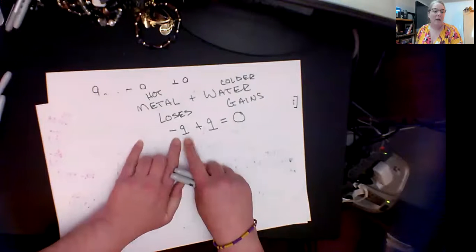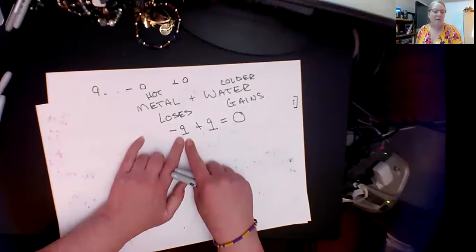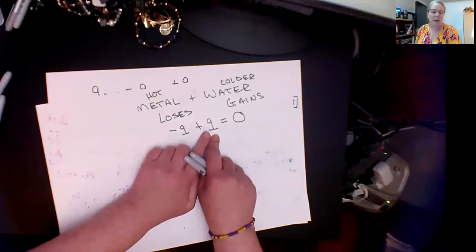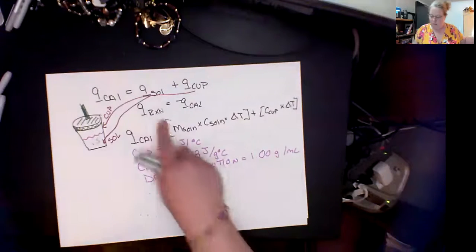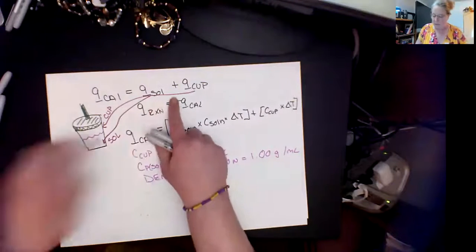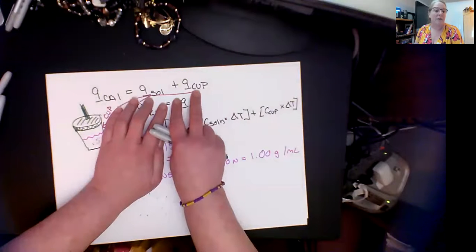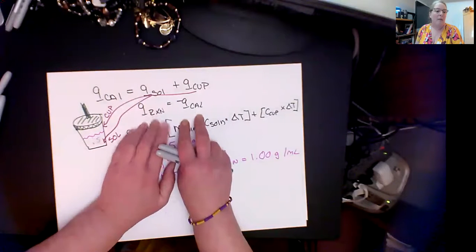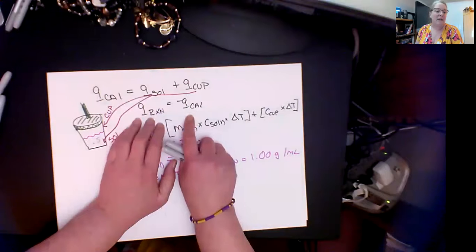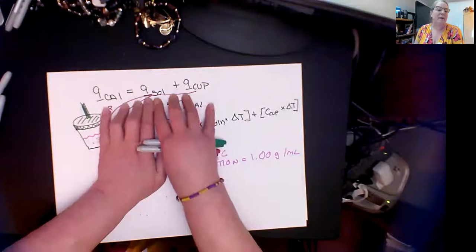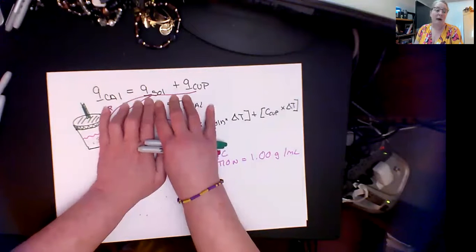What we're saying is that we're going to do a reaction and my reaction is going to give off heat and my calorimeter is going to absorb that heat. I am absorbing, I'm losing heat, I'm gaining heat I'm sorry in the solution in the cup and my reaction is the thing that's causing that to happen. The reason why the negative is on the Q cal side is because this is the thing that we can do the math with.